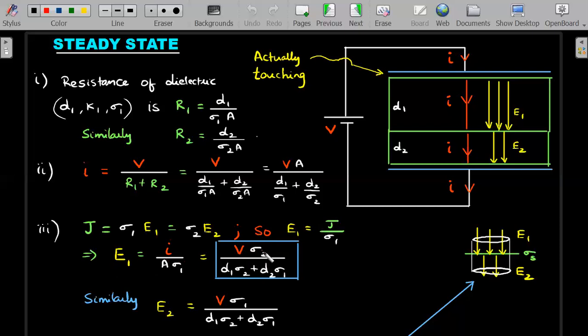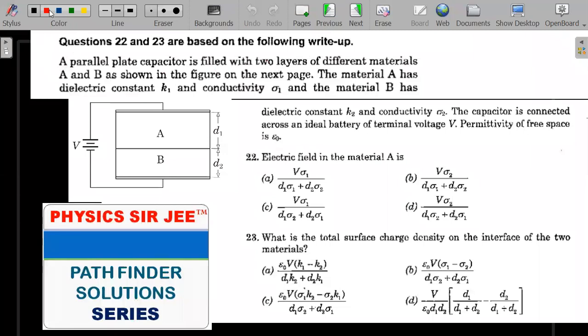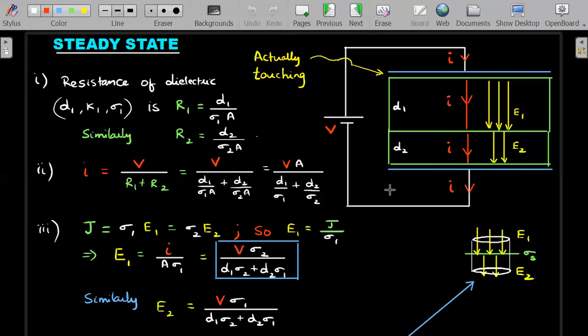So we'll search for this option in the question. Go back and I think V into sigma2 divided by d1 sigma - this thing would be the correct answer. So let's move on to the next question. Similarly you could have calculated for E2. I think if you are good with the pattern recognition, changing 1 to 2 should give you this answer or you trust this mathematics, you'll get the same thing. So E1 and E2 have common denominator, but in the numerator you will get sigma1 and sigma2 exchanged.